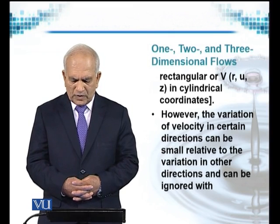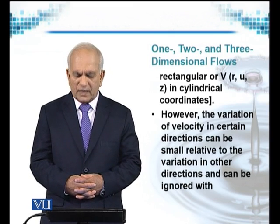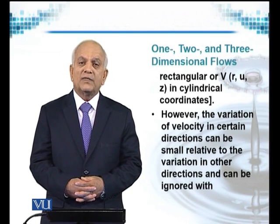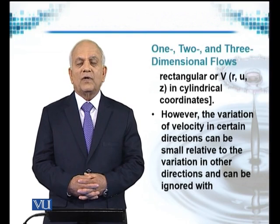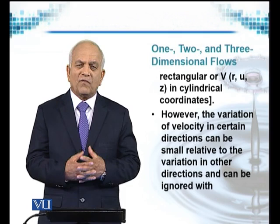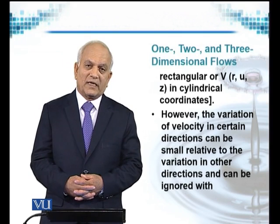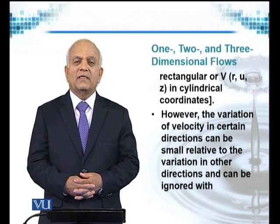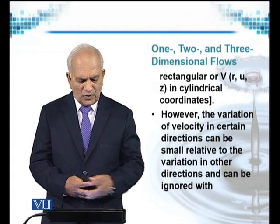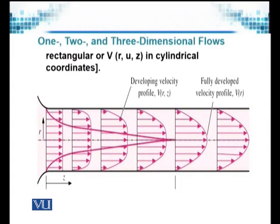However, the variation of the velocity in certain directions can be small relative to the variation in other direction. Therefore, for example, if the velocity vector is dominating, let's say in x direction, then the fluid flow can be ignored in y and z directions or only in r direction and it can be ignored in u and z directions. It depends, all depends on the flow situation and therefore we consider it.